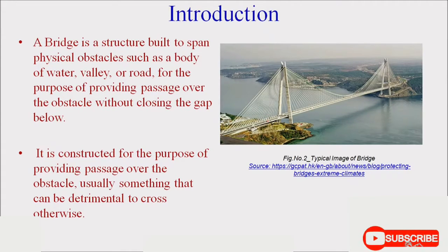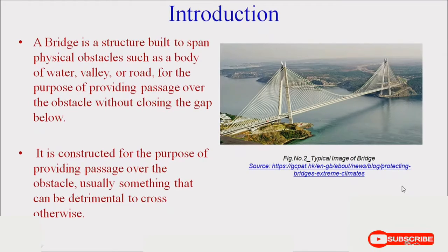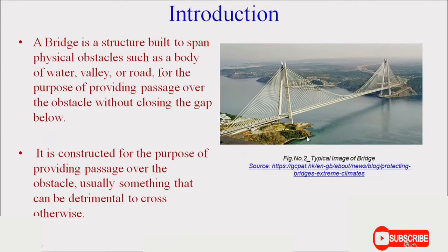A bridge is a structure built to span physical obstacles such as a body of water, valley, or road, for the purpose of providing passage over the obstacles without closing the gap below. Normally we construct bridges over rivers or at hilly areas to provide an efficient transportation system without disturbing the natural obstacles. In this figure you can see it is a river valley, and over this river valley the bridge is constructed.